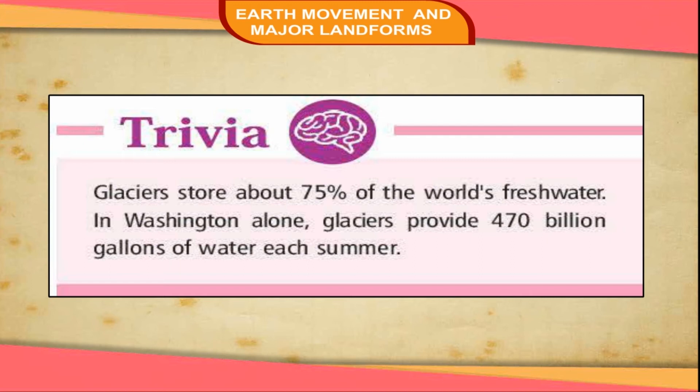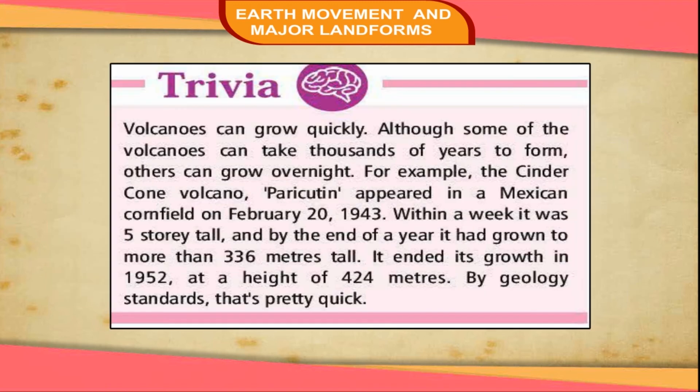In Washington alone, glaciers provide 470 billion gallons of water each summer. Trivia: Volcanoes can grow quickly. Although some volcanoes can take thousands of years to form, others can grow overnight.